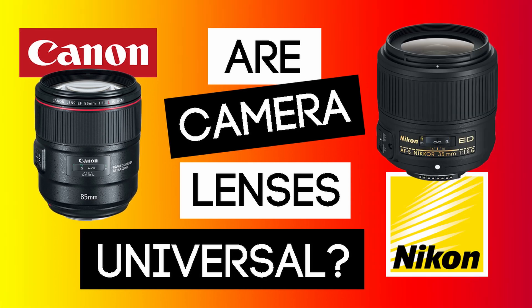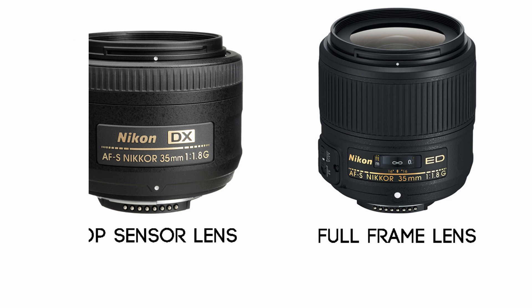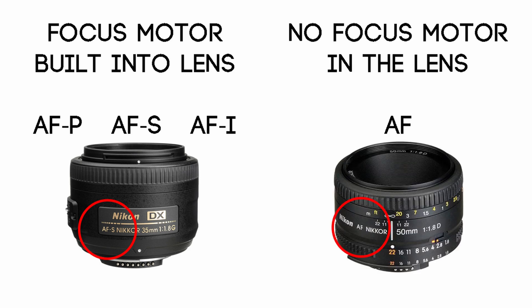Beginners often wonder: are lenses universal? The short answer is no, and in an upcoming video I will go into this in more detail. But for now, what you need to know when it comes to Nikon is that they build their lenses for basically two categories: crop sensor or full frame, and two types of autofocus drive systems — lenses with built-in focus motors and those without.